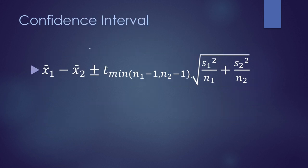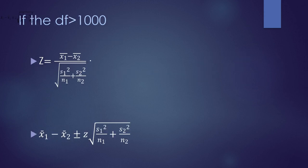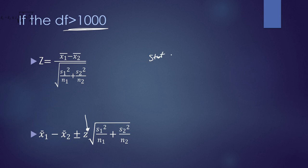The confidence interval for a two-sample mean test is given by a formula, but we're going to use StatCrunch so we don't really need to know it. If the degrees of freedom is greater than 1000, we use the z-statistic, and similarly for the confidence interval we use the z-statistic in place of the t-statistic. Again, since we're using StatCrunch, we don't really need these formulas.